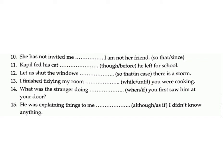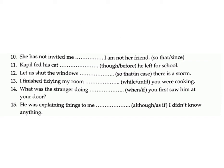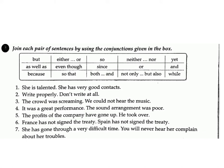Twelve: 'Let us shut the windows — there is a storm.' (so that / in case) Answer: in case. Thirteen: 'I finished tidying my room — you were cooking.' (while / until) Answer: while. Fourteen: 'What was the stranger doing — you first saw him at your door?' (when / if) Answer: when. Fifteen: 'He was explaining things to me — I didn't know anything.' (although / as if) Answer: as if.